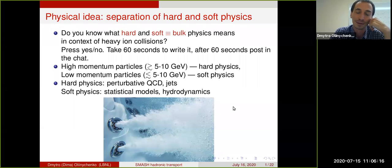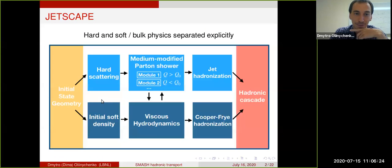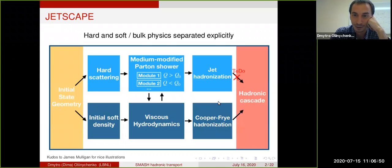In JETSCAPE, scale separation is realized very explicitly. This is the picture that James was showing on Monday. You can see that the top row corresponds to jets, so to hard physics, and the bottom row corresponds to soft physics. Jets are logically separated from the soft bulk part, and in the end everything is supposed to feed to hadronic cascade, which is not exactly true. Here on the next slide you can see there is a to-do thing. James was actually assuming that particles from jets are feeding to the last stage. It is not true yet, and the only thing that gets into the hadronic cascade is particles from the hydrodynamics.